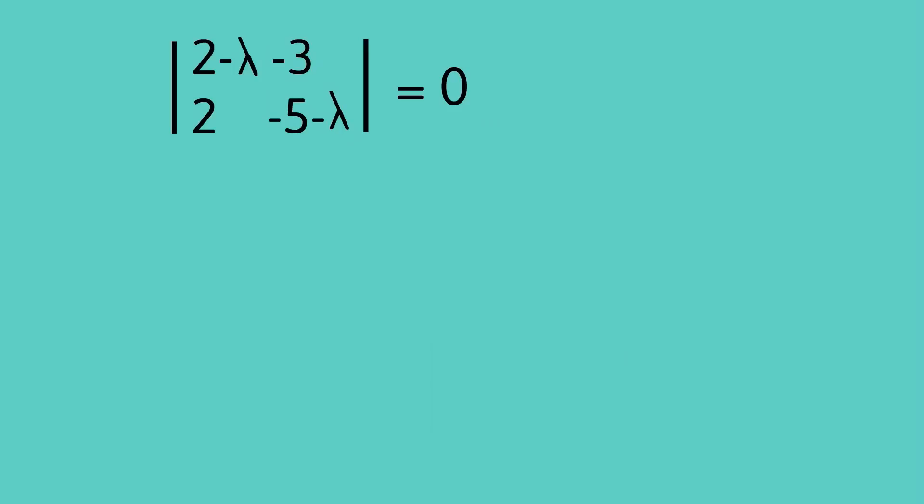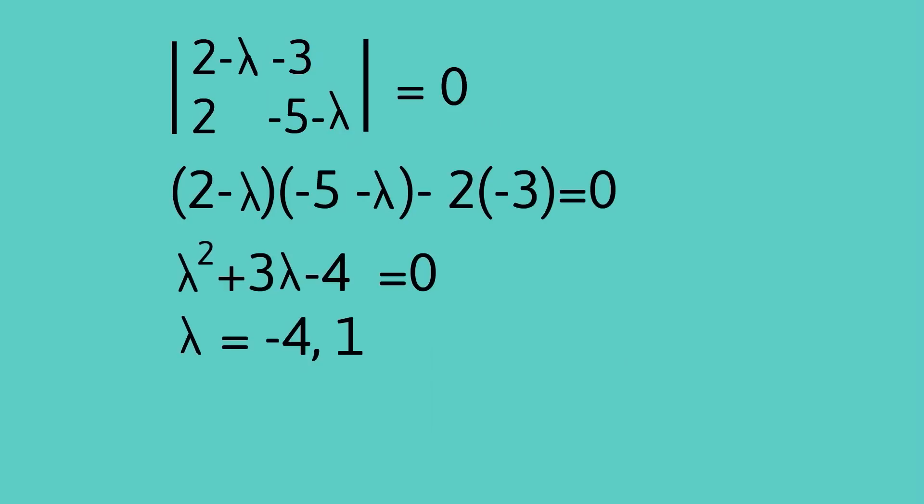So I've put up here the equation where the determinant of this matrix is now equal to the number 0 and when I expand that out I get this equation and then I end up finally solving it and getting that lambda equals negative 4 and 1. So we've made some progress: the eigenvalues of the given matrix are the numbers negative 4 and 1.